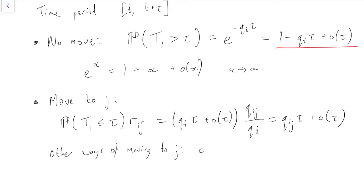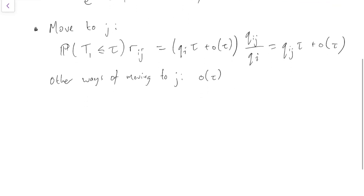Like moving twice in the time period - those are all extremely unlikely. Those are all little o of tau events, so we can ignore those.